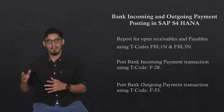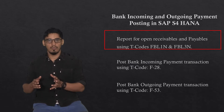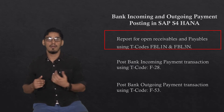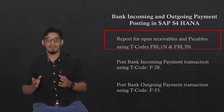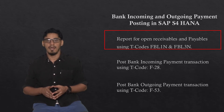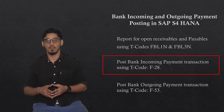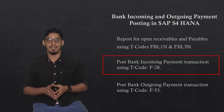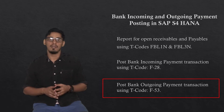In today's video I will perform the following transactions in sequence. First, I will show you the report for vendor and customer open items for payments using transaction codes FBL1N and FBL5N. After that, I will perform the bank incoming payment using transaction code F-28. The last is the posting of bank outgoing payment using T-code F-53.